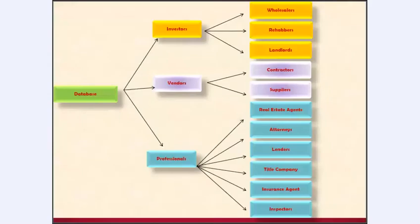This is what a sample database would look like as far as putting together a power team. You have your professionals: your real estate agents, attorneys, lenders, title company, insurance agent, and inspector. Under investors, you have your wholesalers, your rehabbers, and your landlords. And under vendors, you have your contractors and your suppliers — so that you're always prepared.